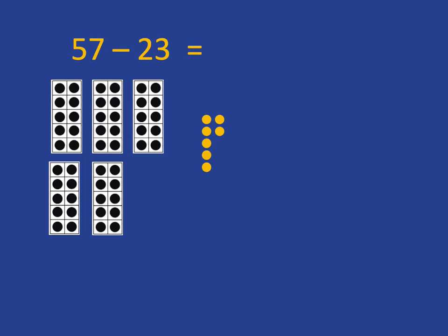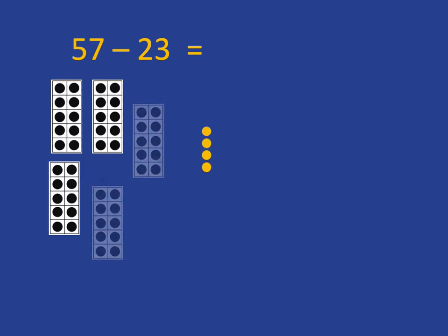Then they need to take away 23 of these. Again, they need to understand that 23 is made up of three ones and two tens. So they're going to take away the three ones and they're going to take away the two tens, and so be able to see that their answer is 34.